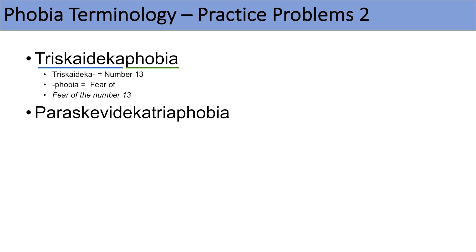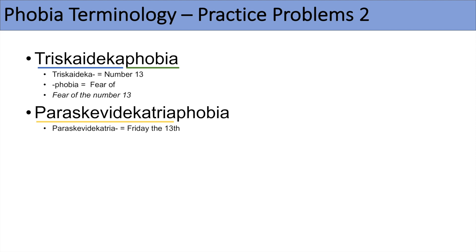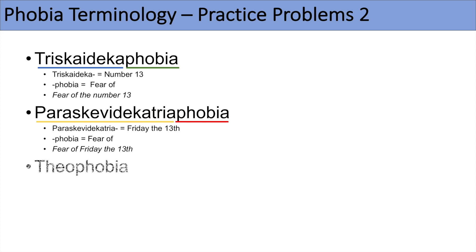Paraskevidekatriaphobia — breaking it down, deca means ten and tri means three, so you can see the number 13 in this word. Paraskevidekatria means Friday the 13th, so paraskevidekatriaphobia is a fear of Friday the 13th. The last practice problem is theophobia — theo, think of words like theologian or theology, this refers to God. So theophobia would be a fear of God.